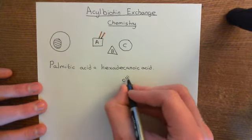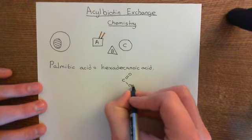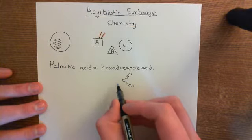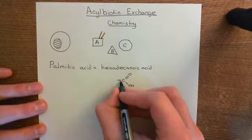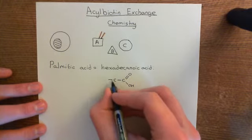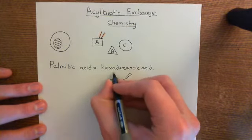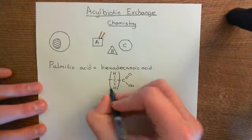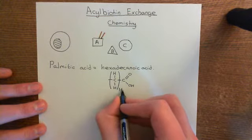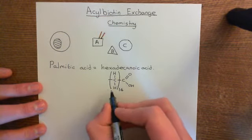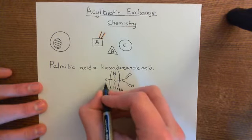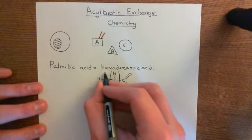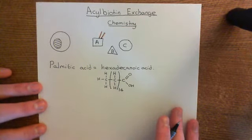Here is a carboxylic acid group. We want the carboxylic acid to have 16 carbons and to be fully saturated, so it will have 14 methylene groups in the middle — bracketed with a 14 at the base to show that — and then a methyl group right at the end. This is the structure of palmitic acid.